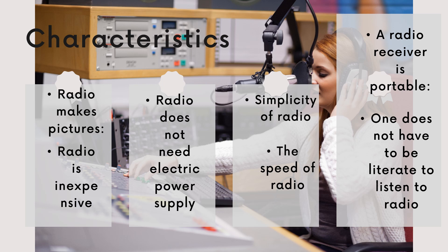The next characteristic is that radio is very simple. The speed of radio programs is uninterrupted and the programs are very speedy and very acceptable. A radio receiver is portable. A radio receiver — that is, the electronic device which we call radio — is portable. Since it runs without electricity, there is no need for a plug point, so it is portable. You can carry a radio to the places where you are going.